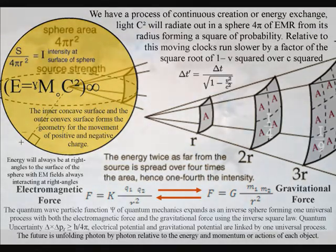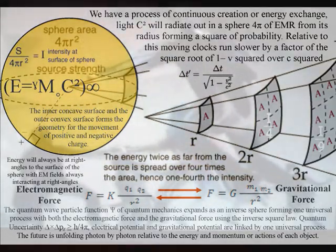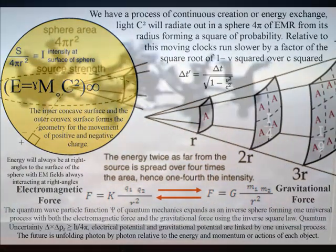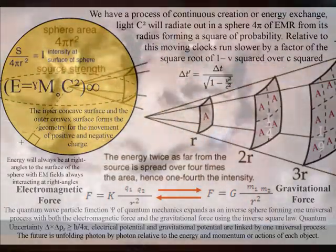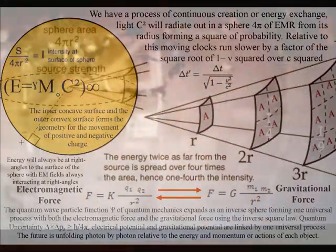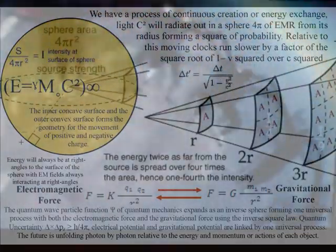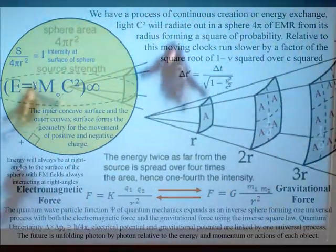We have the inverse square law because the surface area of the light sphere increases with the square of the radius. Thus, the strength of the gravitational field is inversely proportional to the square of the distance from the source.